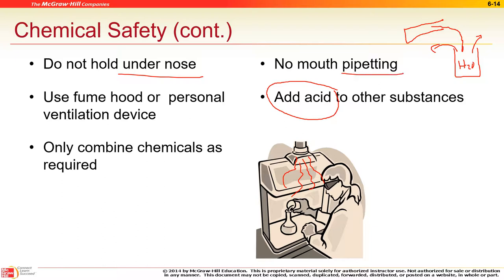A pipette is a measuring straw — it's a glass tube used for measuring liquids. People used to suck up blood, urine, and other chemicals by mouth, but now you use a little squeeze bulb to create suction.